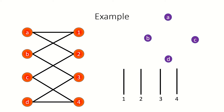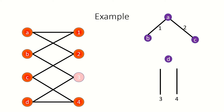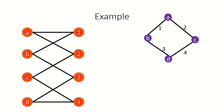Vertex 1 is adjacent to vertices A and B, so line 1 is incident to points A and B. Vertex 2 is adjacent to vertices A and C, so line 2 is incident to points A and C. Vertex 3 is adjacent to vertices B and D, so line 3 is incident to points B and D. Finally, vertex 4 is adjacent to vertices C and D, so line 4 is incident to points C and D. This is our result.